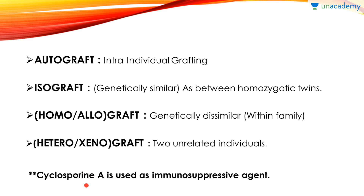Cyclosporine A is an immunosuppressive agent. You need to remember this because it will come in another chapter too. It is used to suppress your immune system. If you don't suppress your immune system at the time of grafting, the sudden immune response might lead to failure of the whole grafting process. However, if you take an immunosuppressive drug, you become prone to several other diseases — that is a risk of these immunosuppressive agents, but everything has pros and cons.